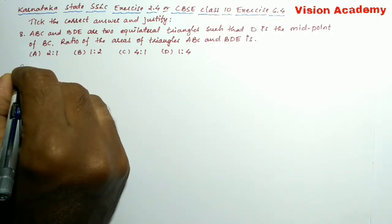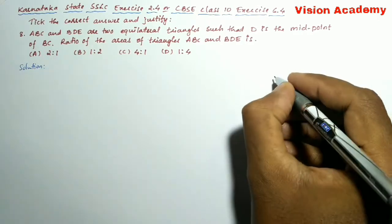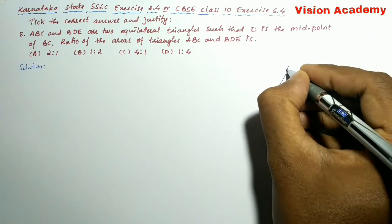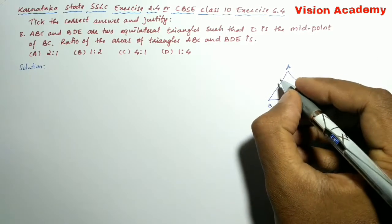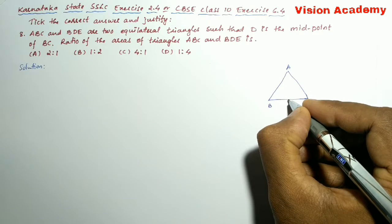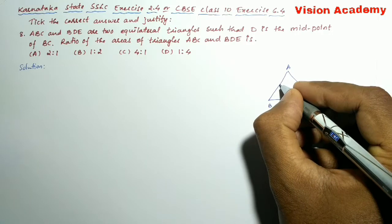Now let us try to find the solution for the given problem. So let us draw a triangle ABC, and here D is the midpoint of BC. Here let me write this one is midpoint of BC.